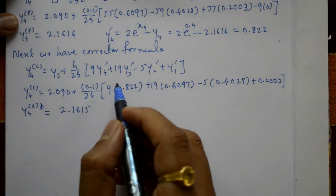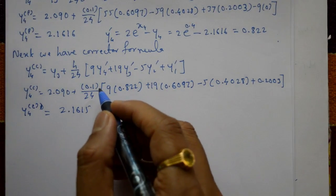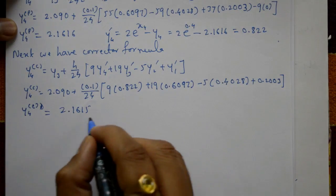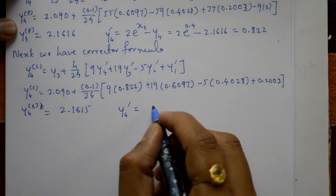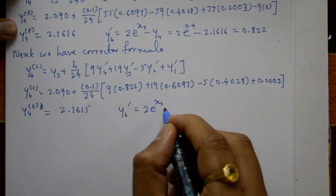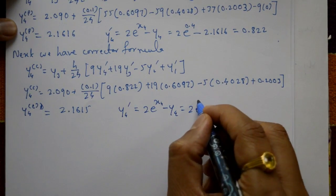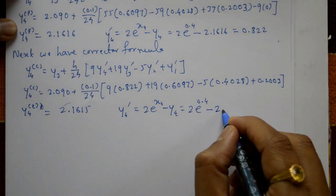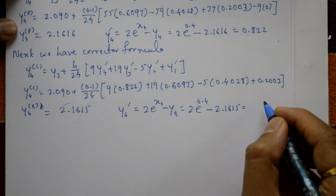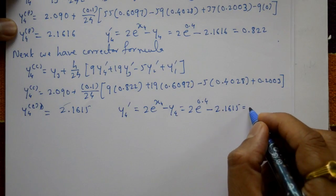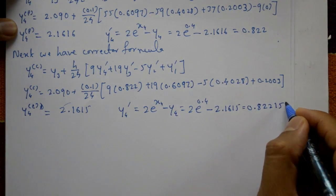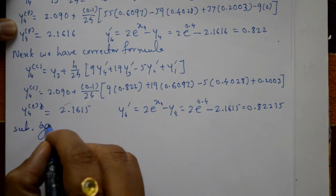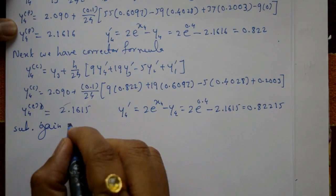Now apply the corrector formula a second time. Compute the updated y4-dash: y4-dash equals 2 into e raised to (x4 minus y4), substituting x4 = 0.4 and y4 = 2.1615, giving y4-dash equal to 0.8222. Substitute again into the corrector formula.